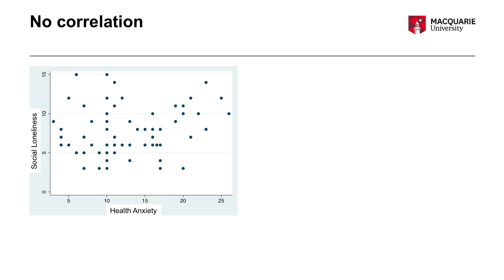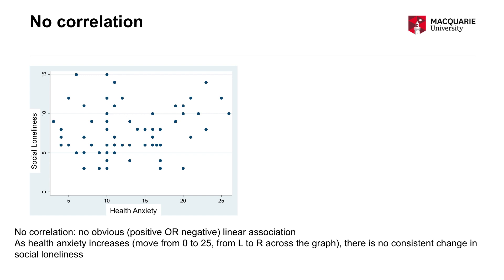If there was no association, no correlation, you might see something like this graph — representing health anxiety on the x-axis and social loneliness on the y-axis. You can see there's no clear positive trend and no clear negative trend; really no association going on. As health anxiety increases, there's no consistent change in social loneliness — it doesn't increase, it doesn't decrease. No correlation means it's just a random scattering of points with no positive or negative trend.